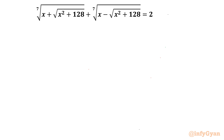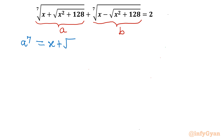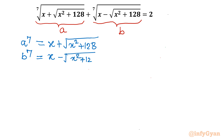Let's begin by considering a substitution. I will consider the first 7th root term as A, and the second term as B. Once we apply this substitution, we can write A⁷ = x plus square root of (x² + 128), and similarly B⁷ = x minus square root of (x² + 128). Adding both equations gives A⁷ + B⁷ = 2x. This is equation number 1.